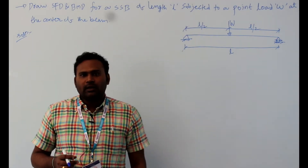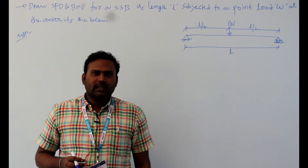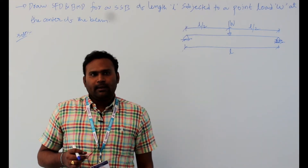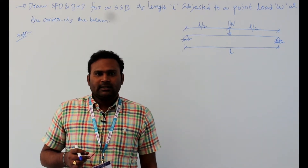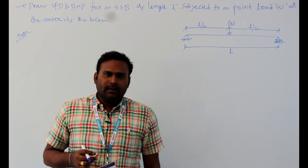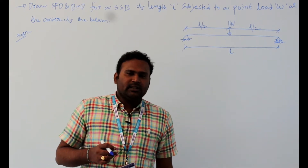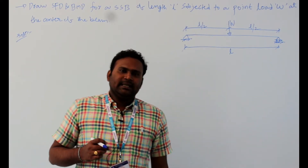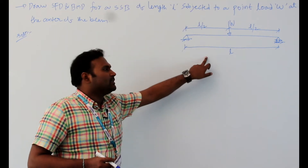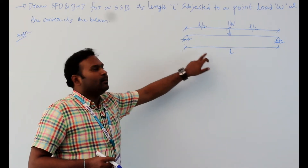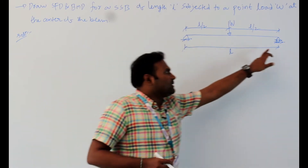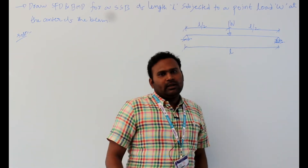We will see how to draw the shear force diagram and bending moment diagram for a simply supported beam subjected to a point load W at the center of the beam, where the length of the beam is L. This is a simply supported beam — one side is a hinged support and the other side is a roller support.